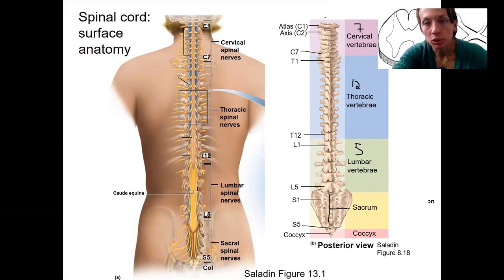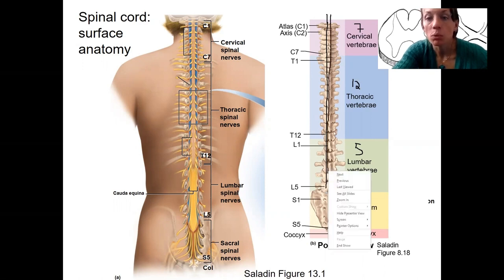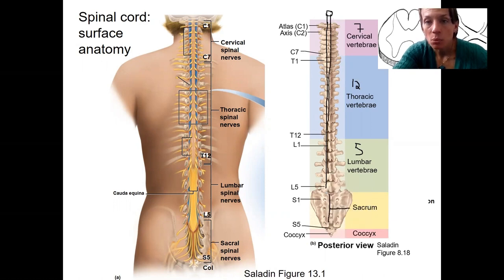The vertebral column is what protects the spinal cord. So the spinal cord is going to run all along inside of this vertebral column — the bones protect the delicate nervous tissue. This is our spinal cord itself. We then have spinal nerves arising from it, carrying information both to and from the spinal cord.